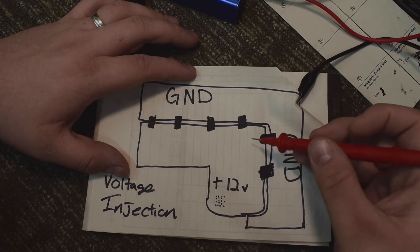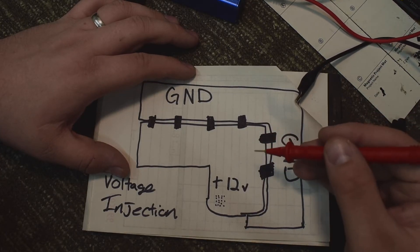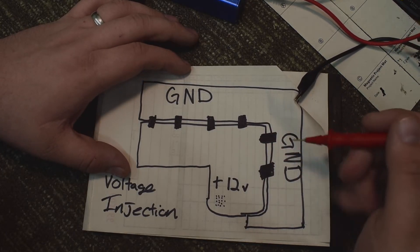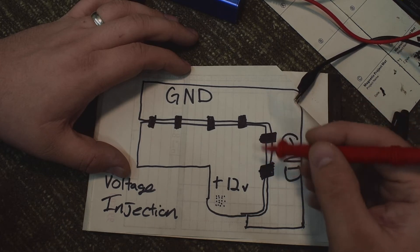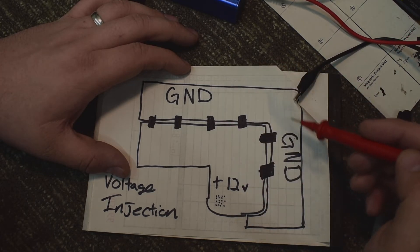The whole thing is, voltage injection is not something too difficult to understand and it makes so much sense on a circuit board. This is a very simplified version of it, but this is voltage injection. So in short, that's how voltage injection works.